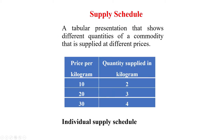The supply schedule is a tabular presentation that shows the different quantities of a commodity that is supplied at different prices. Suppose this is the supply of orange by one farmer in one warada per week.